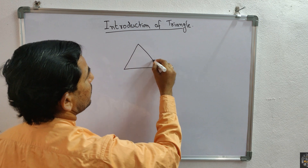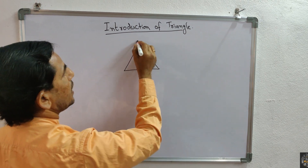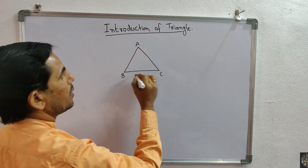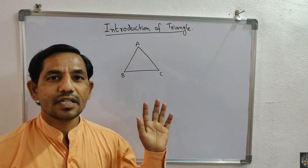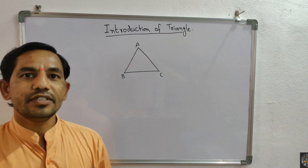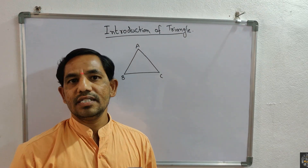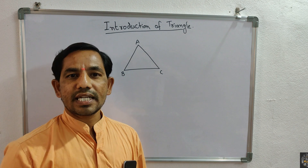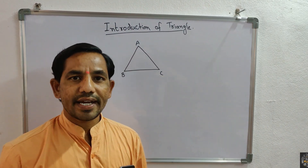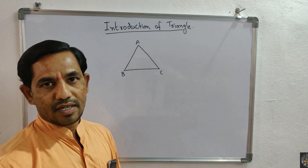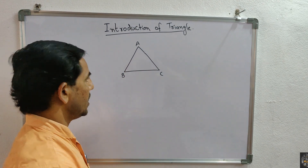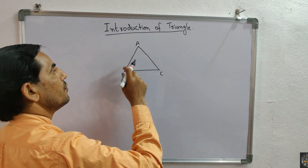This is one triangle. This is point A, point B, and point C — this is triangle ABC. First of all, the definition of a triangle: a closed figure bounded with three line segments is called a triangle. Triangle ABC is a completely closed figure.